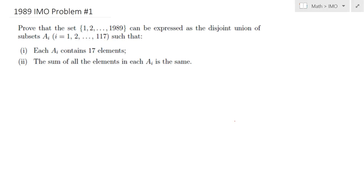Hello everybody, in this lecture we will be solving 1989 IMO problem number 1. Here's a view of this problem. We are given a set of the first 1989 positive integers and we would like to express them as the disjoint union of 117 sets, each with 17 elements and each set having a constant sum.